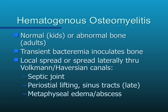Hematogenous osteo is most common in children and adults, usually in areas of abnormal bone. Transient bacteremia will inoculate the bone, and from there it will spread either locally or through the Volkmann and Haversian canals. You can develop septic joints and periosteal lifting, which is usually seen in children because their periosteum isn't as adherent as in adults. Sinus tracts may appear as a late effect, and you can also see metaphyseal edema and abscesses, like a Brodie's abscess.